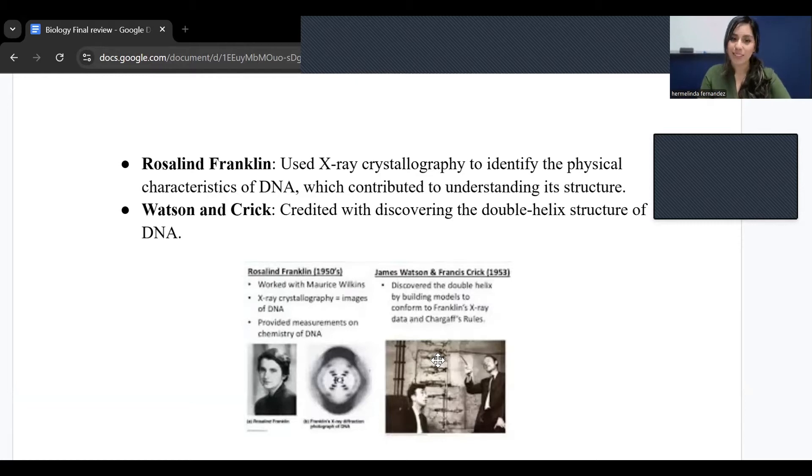And then we have Watson and Crick. Watson and Crick did not discover DNA, but what they did was discover the double helix structure. They structured that double helix structure. So that DNA structure, they were the first ones who made that model.